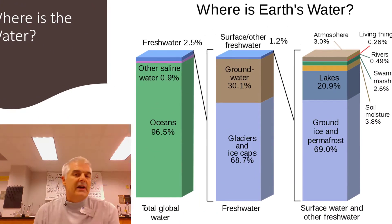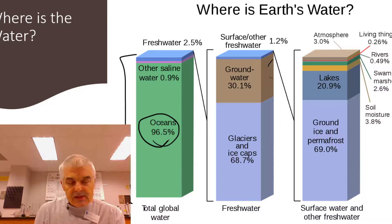Interesting stuff here is that water is found in lots of places. Most of the water in the world is found in the oceans. 96.5% is salt water. So when we talk about fresh water, it's just this sliver that says 2.5%.